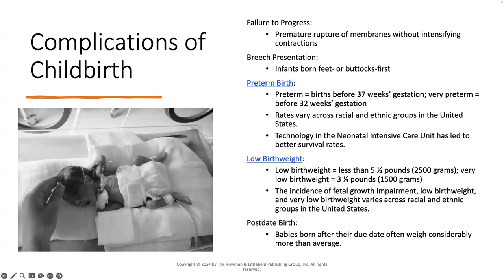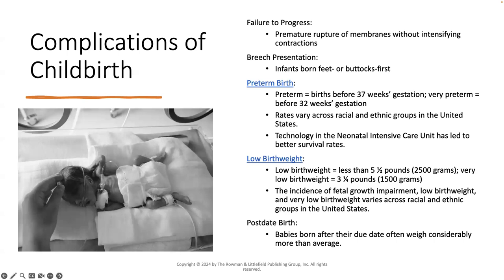Technology in the neonatal intensive care unit has led to better survival rates overall in the USA, which is fantastic. Another complication is low birth weight, which is less than five and a half pounds; very low birth weight is less than three and a quarter pounds. The incidence of fetal growth impairment, low birth weight, and very low birth weight also varies across racial and ethnic groups. There's also post-date birth — babies born after their due date who often weigh considerably more than average — which can be a complication or very natural, truly dependent on each birthing person and each child.